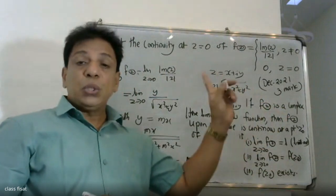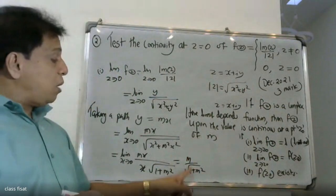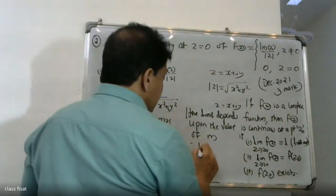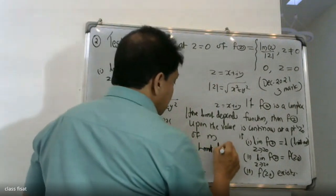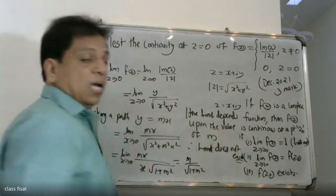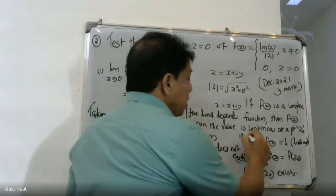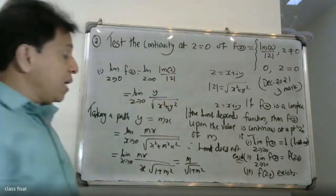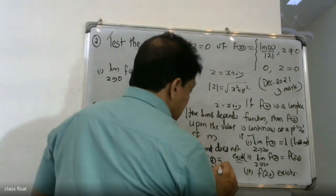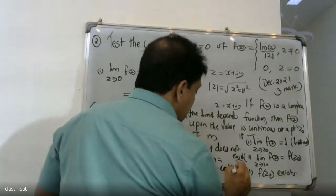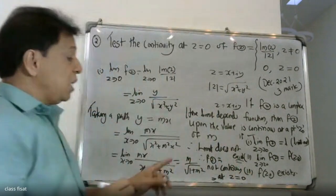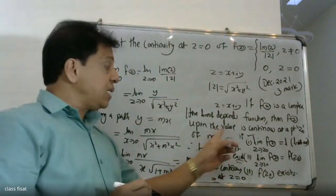This limit value depends upon the value of m, which changes along different paths. Therefore, the limit is not unique. Since the limit is not unique, the limit does not exist. Since the first condition fails, we can say that the function f of z is not continuous at z equal to zero.